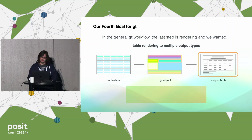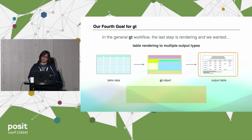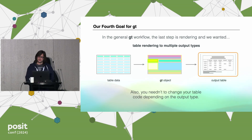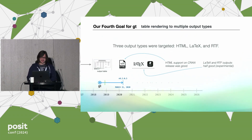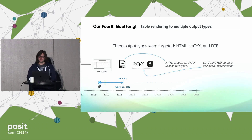The fourth goal was really good table rendering to multiple output types. You have an input data table, use functions to make a GT object, then render it to an output table. You shouldn't need to change your code depending on the output type. Three output types were targeted initially: HTML, LaTeX, and RTF. HTML support was pretty good on the CRAN release. LaTeX and RTF were half-good — experimental — but at least there. You have to start somewhere.